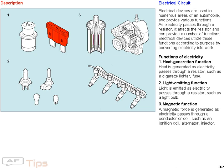As electricity passes through a resistor, it affects the resistor and can provide a number of functions. Electrical devices utilize those functions according to purpose by converting electricity into work.